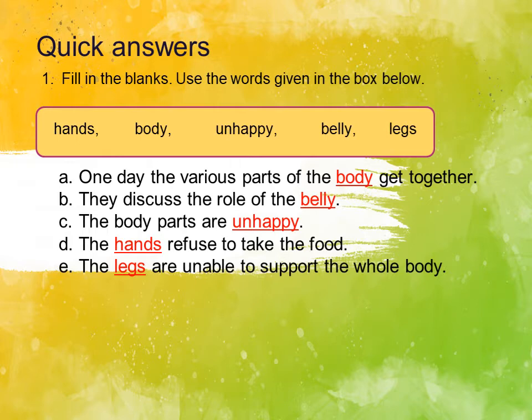C: How were the body parts feeling? When the various parts of the body get together, they discuss the role of the belly. They discuss that the belly is doing nothing — the belly is not doing enough work while all the other members do all the work. So when they discuss all this, the body parts are unhappy. The answer is: the body parts are unhappy.